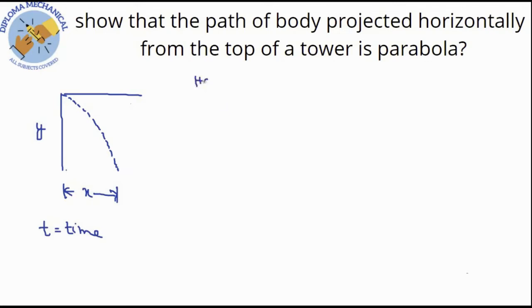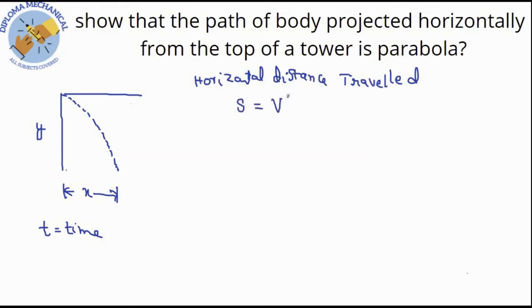The horizontal distance travelled is equal to the formula s = v × t, so x = v × t. From this equation, t = x / v.